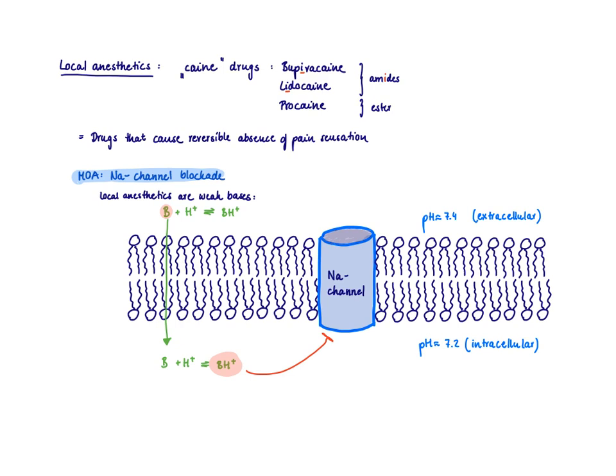It gets access when the sodium channel is in the open state. However, the inactivated state of the sodium channel is the one that the local anesthetic is the most tightly bound to and blocks it.